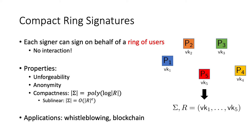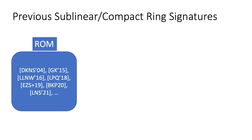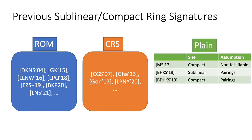Ring signatures have been studied for a while, and they have myriad applications such as authenticating data for whistleblowers, which was the original motivation, as well as more recent ones, such as usage in cryptocurrencies to authenticate transactions. Ring signatures have been studied in the Random Oracle model, the CRS model, and in the Plain model, that is, without any modeling assumptions. All works mentioned here are compact or sublinear ring signatures; however, there are earlier initial works that were linear.